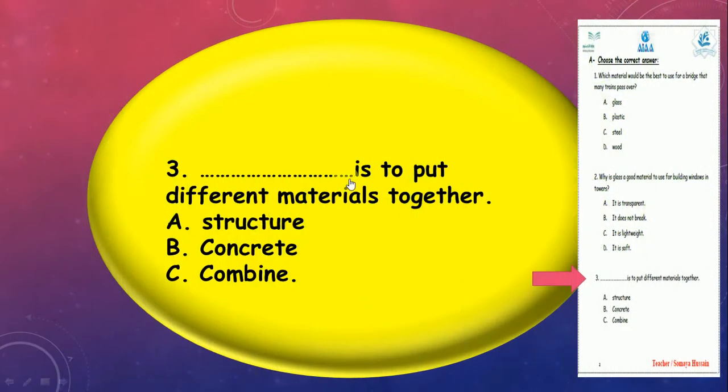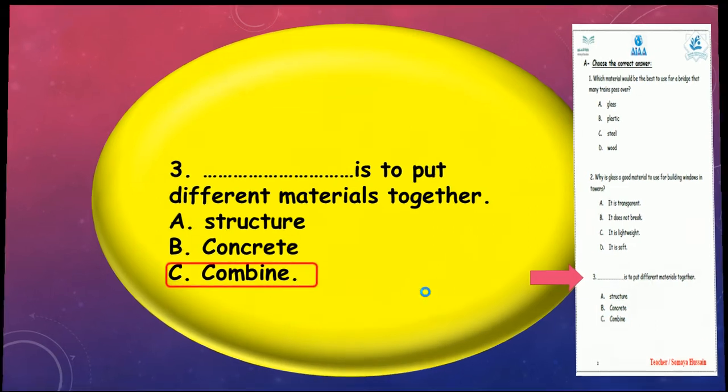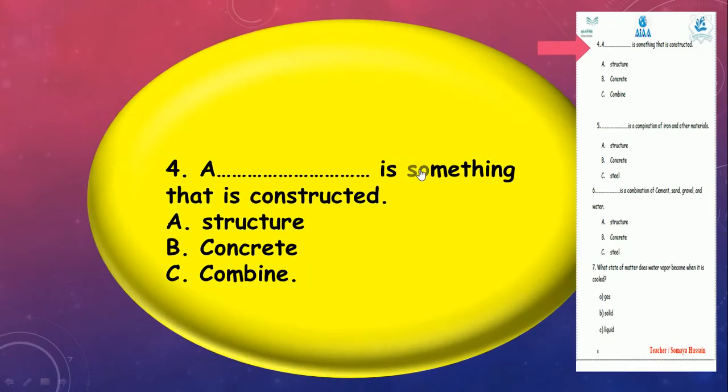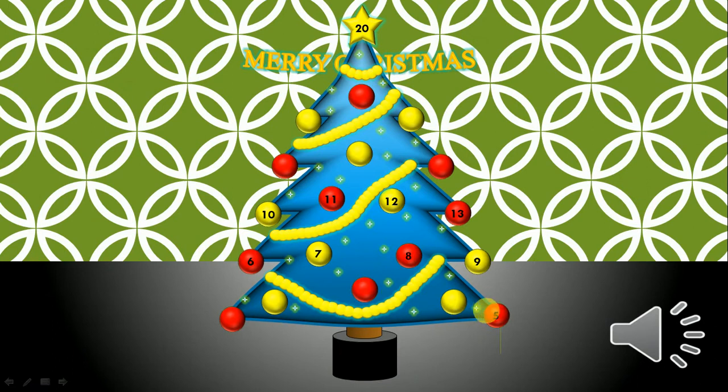Number 3: What is to put different materials together, put them together to build or create something? Structure, concrete, or combine? Combine, good job guys. Number 4: What is something that is constructed? We already said constructed means build it, like hospital, school, house. So it's structure, concrete, or combine? Structure, good job.